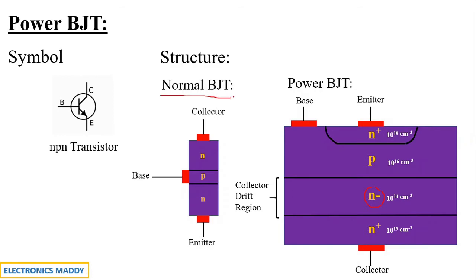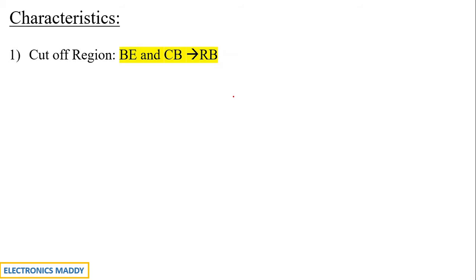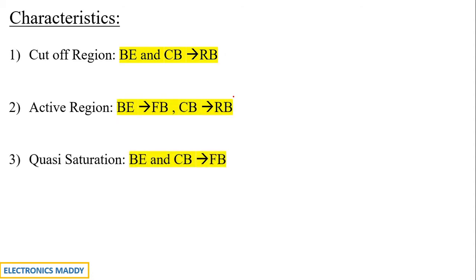Now that we know the structure and symbol, the most important thing to analyze is the characteristics of a power BJT. Assuming some knowledge of normal BJT, I will explain the characteristics by comparison. We are focusing only on output characteristics because they show deviations from a normal BJT. The different modes in the output characteristics are: cutoff region, active region, quasi-saturation region, and hard saturation region.